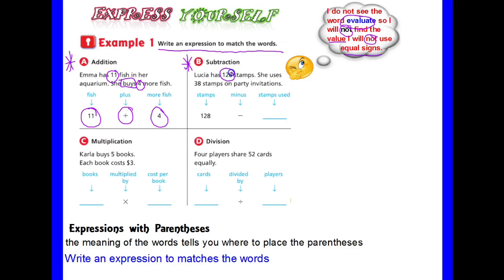Let's look at subtraction. Lucia has 128 stamps. That's the number of stamps she started with. She uses—when we use something we subtract. We take away from what we have. She uses 38 stamps on party invitations. 128 minus 38.